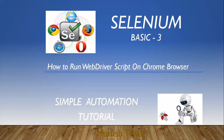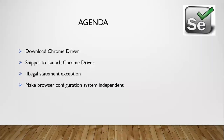Hi guys, welcome back to the Automation Point. Today's tutorial agenda is: download ChromeDriver, write a snippet to launch ChromeDriver, understand IllegalStatement exceptions, and make browser configuration system-independent. To download the ChromeDriver, let's move to the Selenium official site.